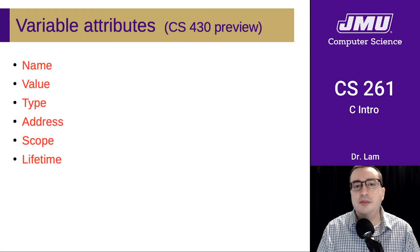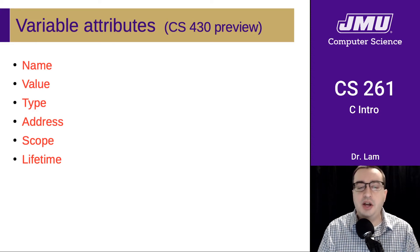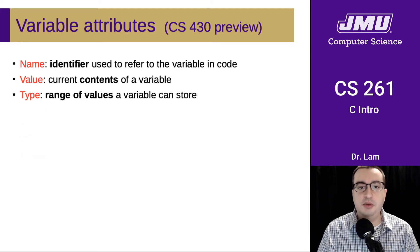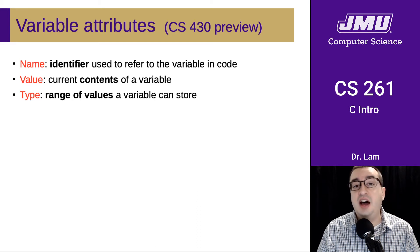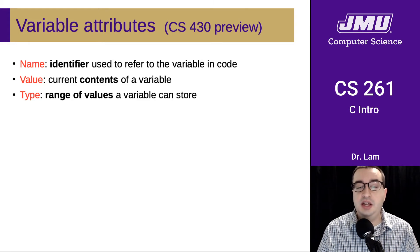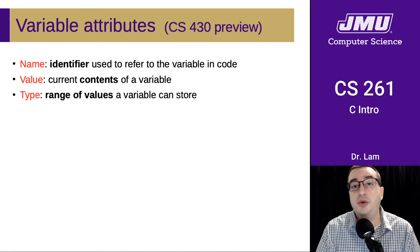There are six main attributes to every variable — you'll study these in more depth in CS 430, but for now I want to give a brief working definition so we can discuss them in the context of C. Every variable has a name, a value, and a type. The name is just an identifier used to refer to the variable in code. The value is the current contents of the variable. The type is the range of values a variable can store — for instance, an integer type encodes all possible integers representable using the given width.